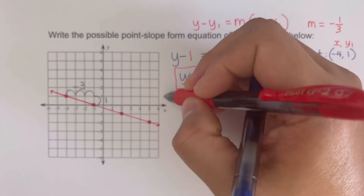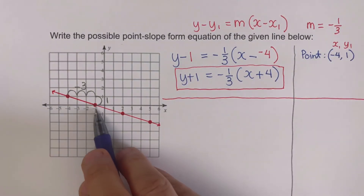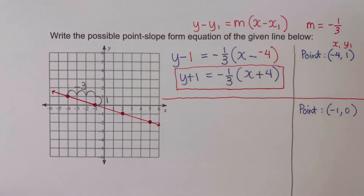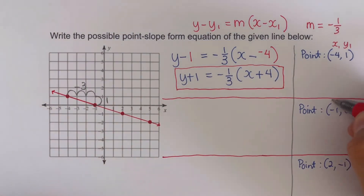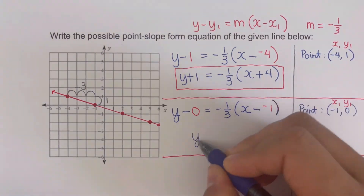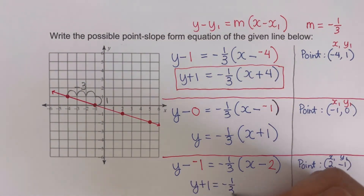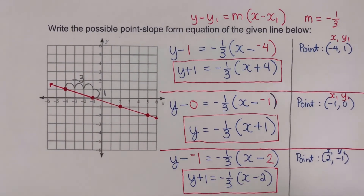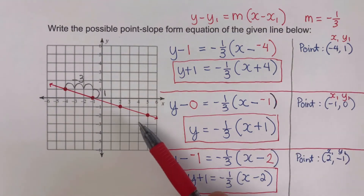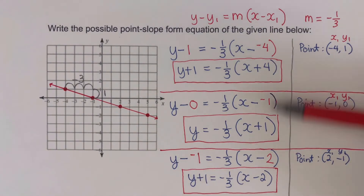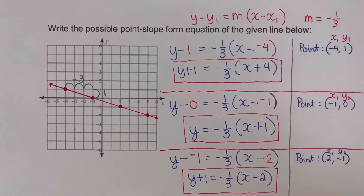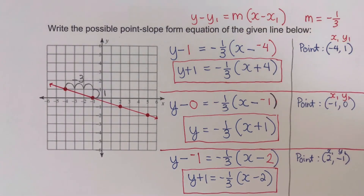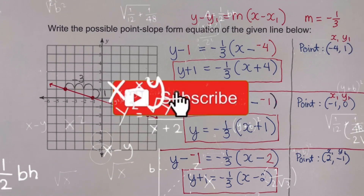Using the next point, negative 1, 0, and the third point, 2, negative 1, we can write two more equations. These three equations are all possible equations for this line. We can have an infinite number of combinations using any points on the line, but these three are shown as examples using the identified lattice points. If you find this video helpful, hit like and subscribe for more math videos. See ya!